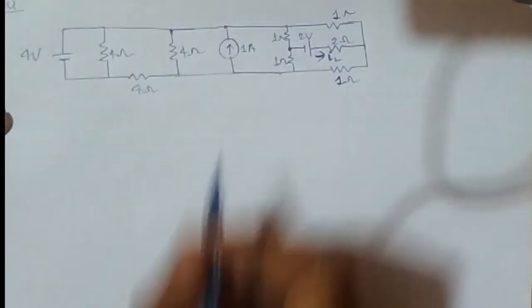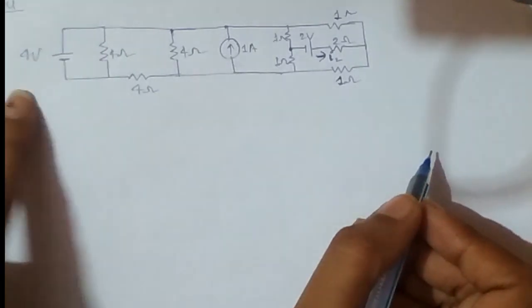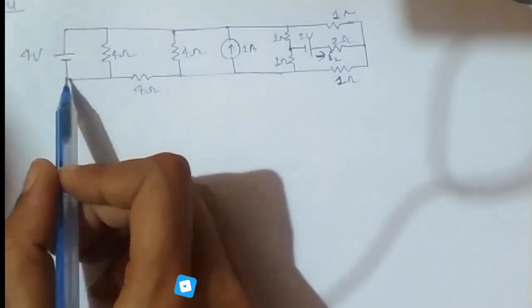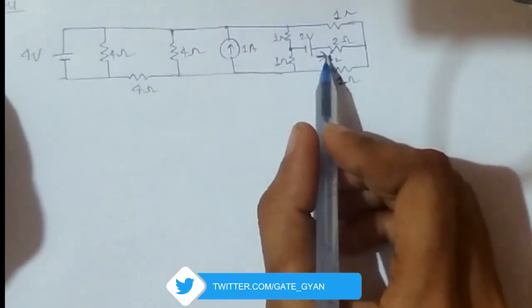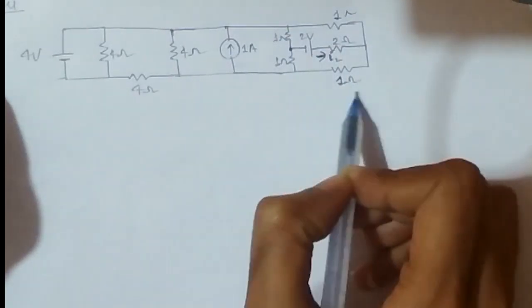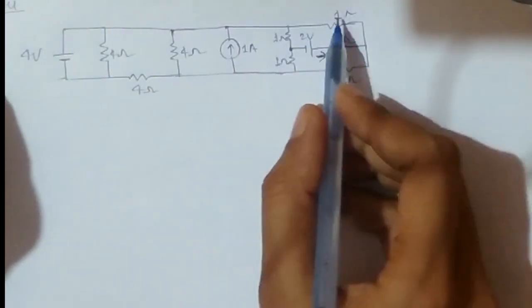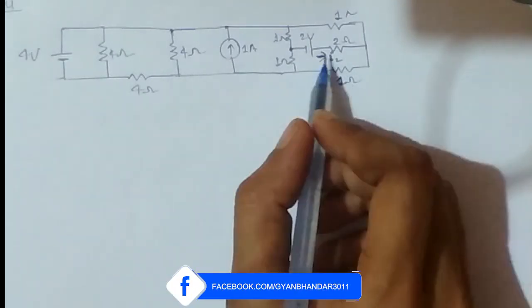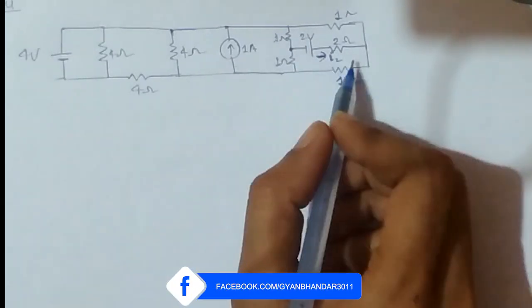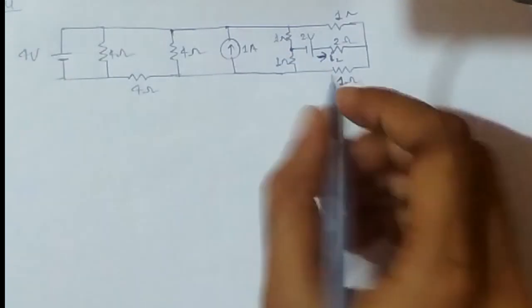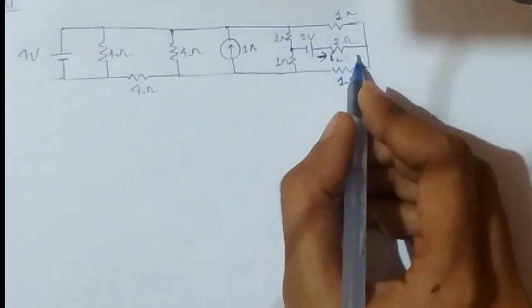Here what we can observe is that if we consider the four volt source, then this circuit becomes like a bridge circuit where I am providing four volt, and this will be my Z1 up to Z3, Z4. So this becomes a balanced bridge, which implies that the current flowing through it in a balanced bridge is zero. So this will become zero.